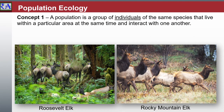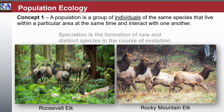Speciation is the evolutionary process by which populations evolve to become distinct species. Charles Darwin was the first to describe the role of natural selection in speciation in his 1859 book, The Origin of the Species.